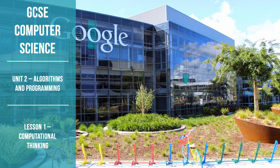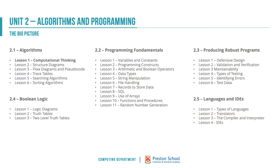This lesson is the first of Unit 2. Unit 2 looks at algorithms and programming, and this first lesson is all around computational thinking. There are five sections to Unit 2: Algorithms, Programming Fundamentals, Producing Robust Programs, Boolean Logic, and Programming Languages and IDEs. This is the very first lesson — computational thinking — right in the top left-hand corner.